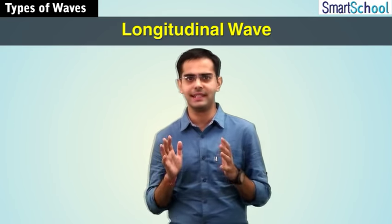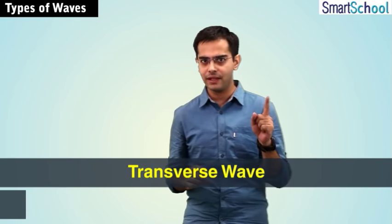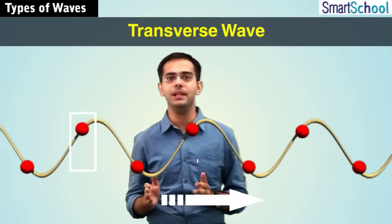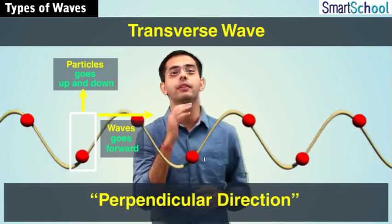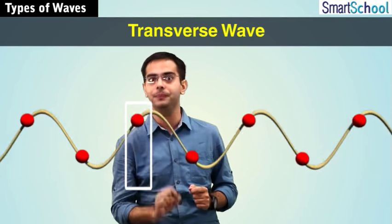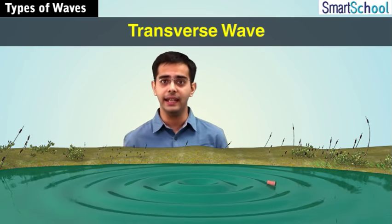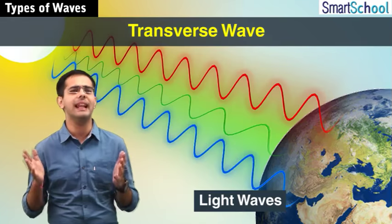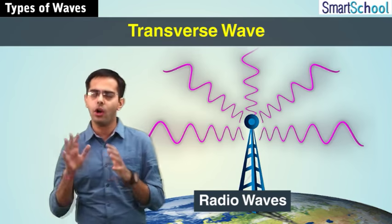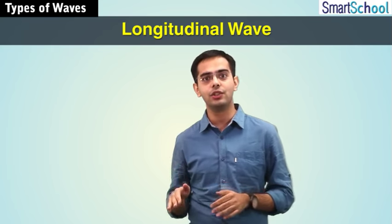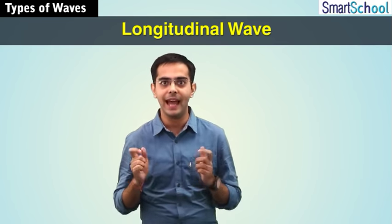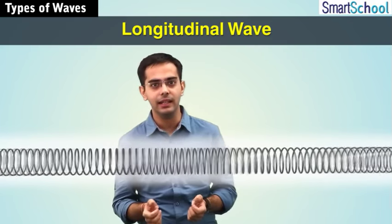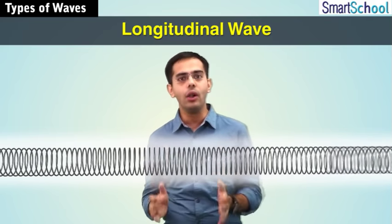To summarize, there are two types of waves: transverse waves and longitudinal waves. In a transverse wave, particles of the medium move perpendicular to the direction of wave propagation, oscillating about their mean position. Examples include ripples on a pond, waves on a string, light waves, heat waves, and radio waves. In a longitudinal wave, particles move parallel to the direction of wave propagation, with compressions and rarefactions. Examples include sound waves and waves in a slinky. In the next module, we will discuss sound waves in detail.